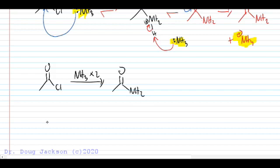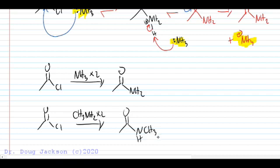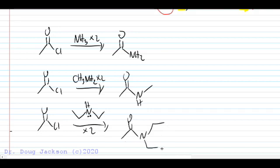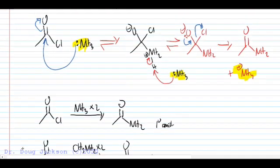So again, to recap this, acyl halides react with excess ammonia to form a primary amide. They react with a primary amine in excess to form a secondary amide, such as we see here in skeletal structure where we would draw that methyl. And finally, they react with a secondary amine like diethylamine here, again in excess, to form a tertiary amide.